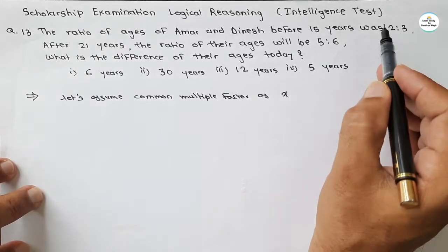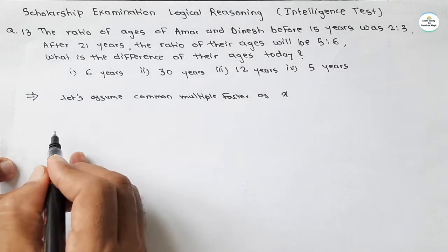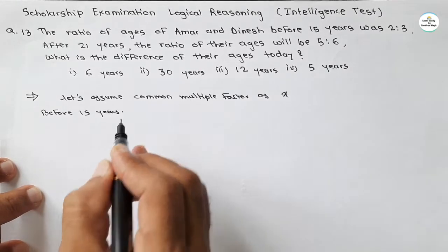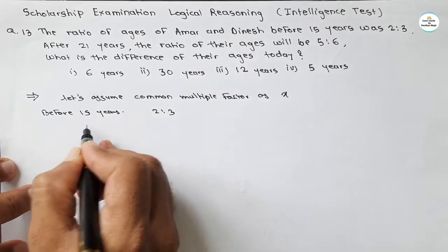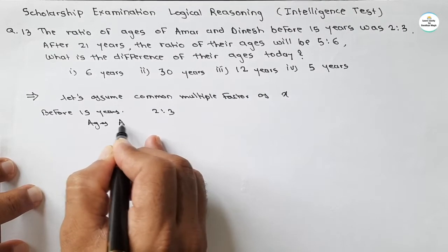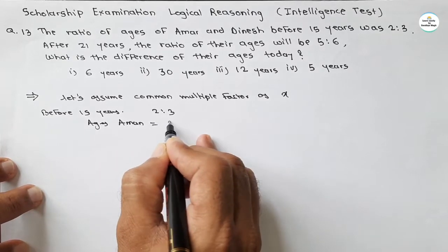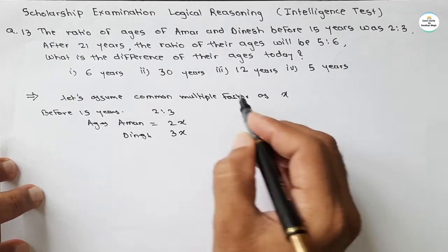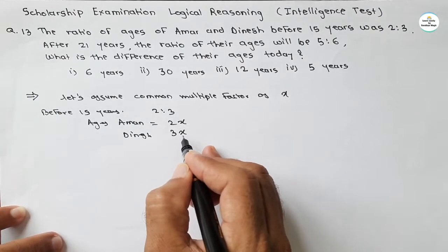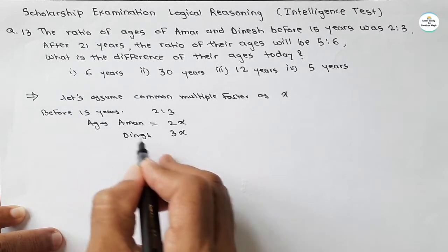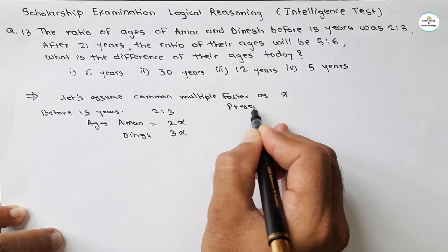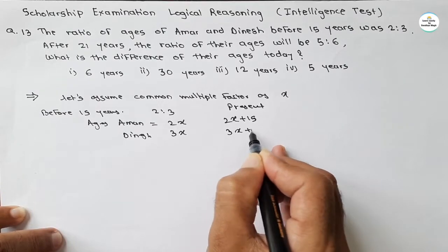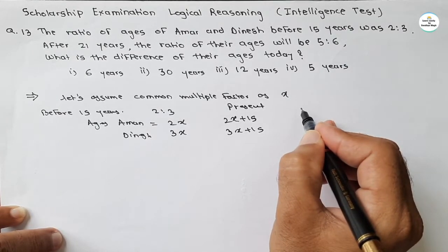So before 15 years, the ratio was given as 2 to 3. First condition: before 15 years, ratio is 2 to 3. So ages will be — ages of Amar and Dinesh will be 2x and 3x, because we have considered x as a common multiple factor. So present Amar age will be 2x plus 15 and Dinesh age is 3x plus 15.